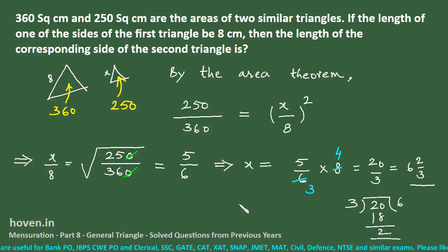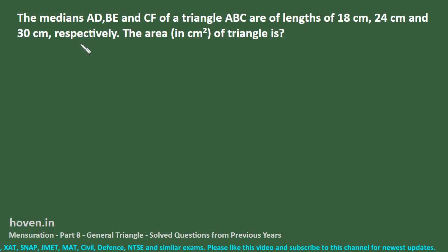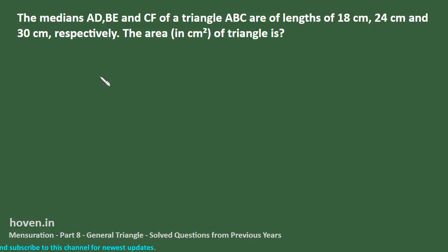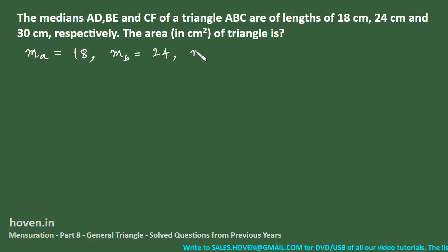Let us move to the next question. The medians AD, BE, and CF of triangle ABC are 18, 24, and 30 respectively. The area of the triangle is what? This is a plain application of Heron's formula for medians, which has already been discussed.